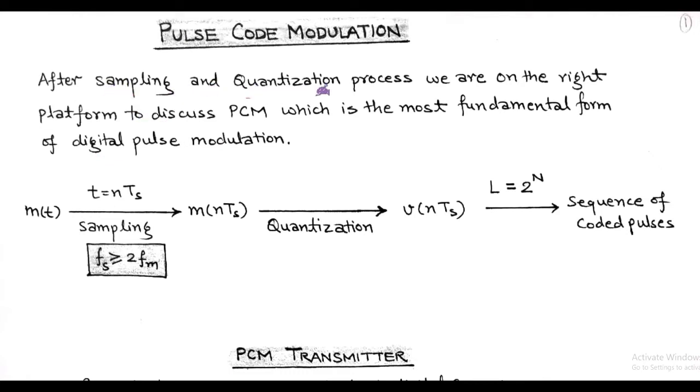In this, sampling and quantization processes are the basic steps to generate a sequence of coded pulses. Initially, the modulating signal m(t) is sampled at t = nTs with Nyquist rate Fs ≥ 2Fm. After sampling, we have discrete time signal m(nTs). In the quantization process, the continuous amplitude range of discrete time signal gets converted into finite discrete amplitude levels, and we get quantized signal v(nTs). This quantized signal is discrete in both time and amplitude.